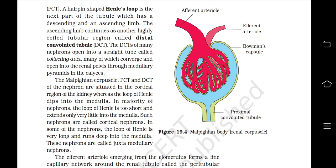The Malpighian corpuscle, PCT and DCT of the nephron are situated in the cortical region of the kidney, whereas the loop of Henle dips into the medulla. In the majority of nephrons the loop of Henle is short and extends only slightly into the medulla — these are called cortical nephrons. In some nephrons the loop of Henle is very long and runs deep into the medulla — these are called juxtamedullary nephrons.